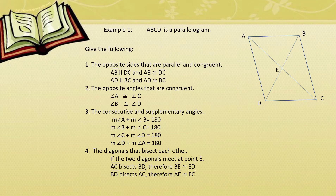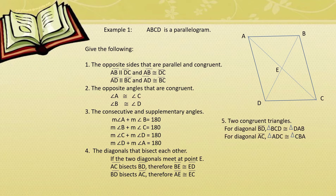Number four: the diagonals that bisect each other. The two diagonals meet at point E. Considering diagonal AC, it bisects BD, so BE is congruent to ED. And diagonal BD bisects diagonal AC, so AE is congruent to EC. Number five: give the two congruent triangles. Considering diagonal BD, the two congruent triangles are triangle BCD and triangle DAB. Considering diagonal AC, triangle ADC is congruent to triangle CBA.